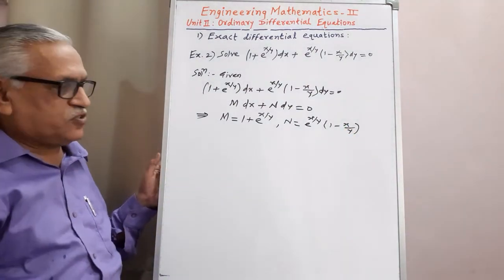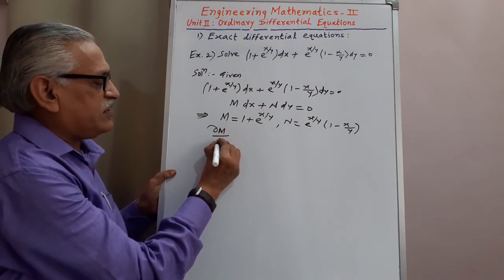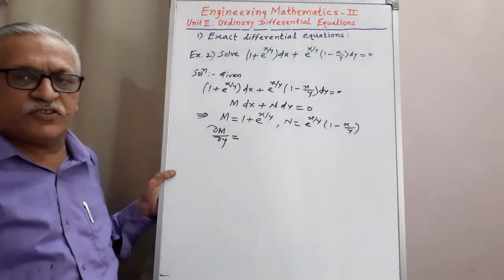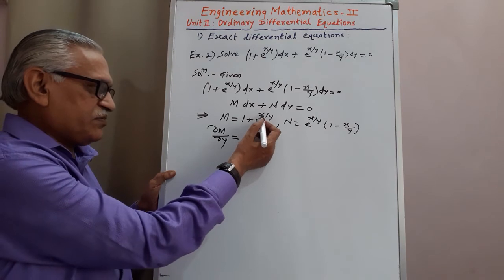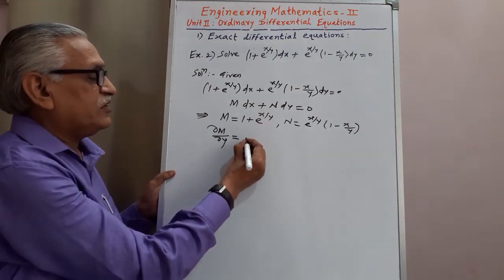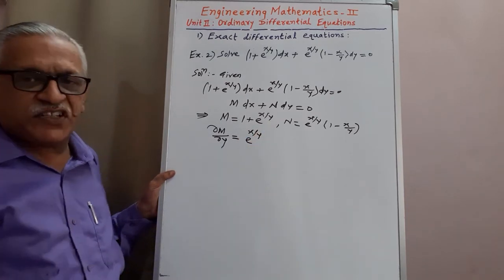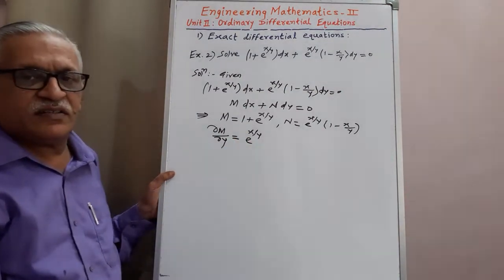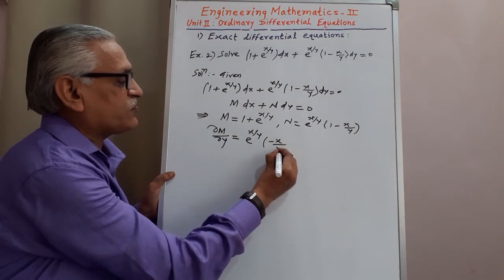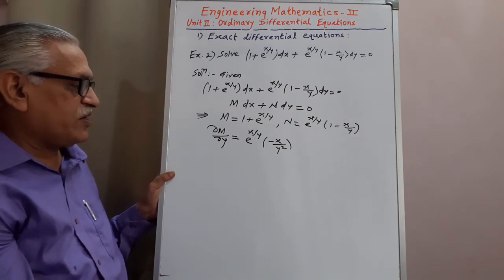To check exactness, we find ∂M/∂y keeping x constant. The constant term 1 has derivative 0. For e^(x/y), applying the chain rule, the derivative of x/y with respect to y is −1/y², so ∂M/∂y = e^(x/y) · (−x/y²).